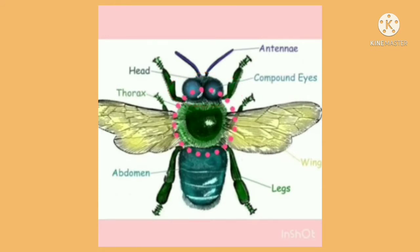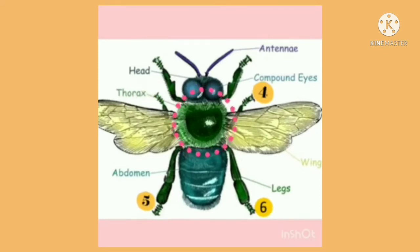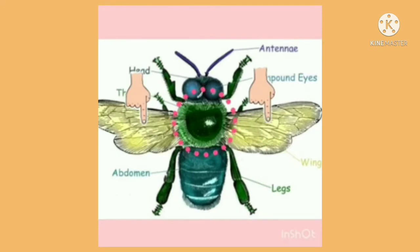Next is the thorax. There are 6 legs that are attached to the thorax. Many kinds of insects also have 1 or 2 pairs of wings to fly, which are also attached to the thorax.